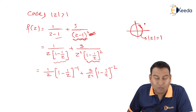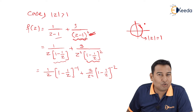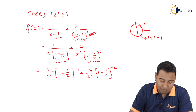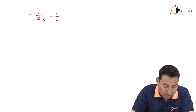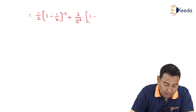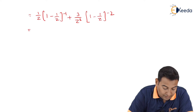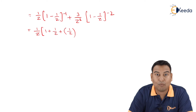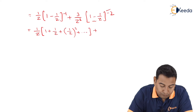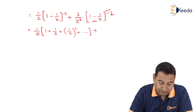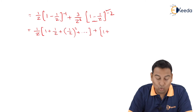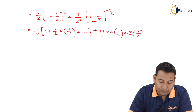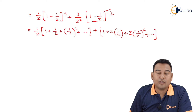Applying the formulas: (1 - x)^(-1) = 1 + x + x² + ... and (1 - x)^(-2) = 1 + 2x + 3x² + 4x³ + ... where x = 1/z. Expanding: (1/z)·(1 + 1/z + 1/z² + ...) plus (3/z²)·(1 + 2/z + 3/z² + 4/z³ + ...).